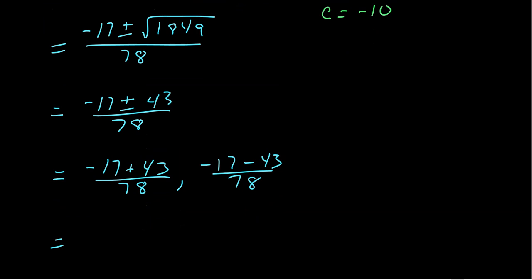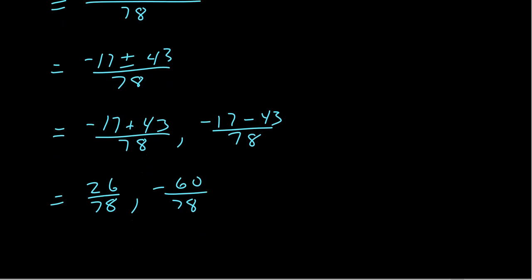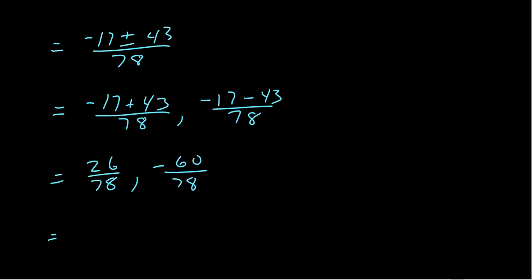So the first one, negative 17 plus 43, will be 26 over 78. And then of course we want to reduce fractions because we always love to reduce fractions. So 26 over 78 will reduce to one third, and then negative 60 over 78 will reduce to a negative 10 thirteenths.